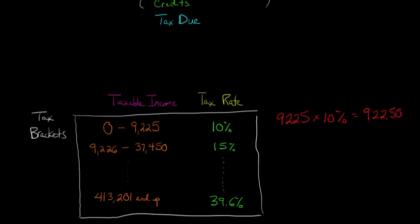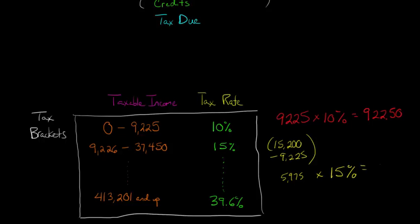We take our taxable income of $15,200 and subtract $9,225 — the amount we're already paying 10% on — so we don't double count it. That gives us $5,975, which is taxed at the higher rate of 15%, equaling $896.25. So in reality, we're paying two different tax rates. The first $9,225 is taxed at 10%, and the next $5,975 is taxed at 15%.